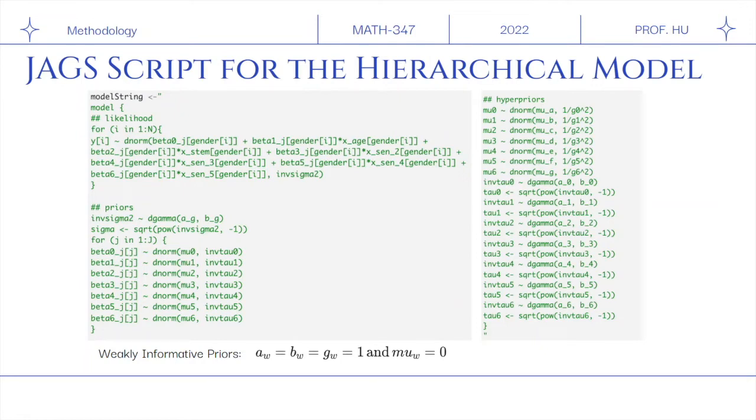as a normal distribution with a gender-specific mean and a common sigma. And the gender-specific mean is modeled as a linear combination of our predictors: age, STEM, and seniority.